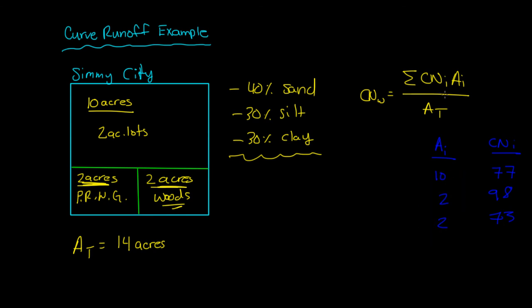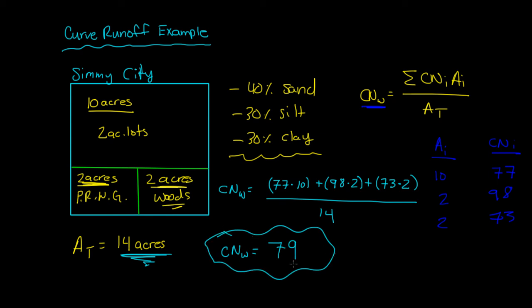Our formula is CN times A_i, or CN_i times A_i. You add all those together, divided by the total area, and you should get your curve runoff number for the whole city. So CN weighted is equal to 77 times 10 acres, plus 98 times 2, plus 73 times 2, and you divide it by the total area, which was 14. And if you punch that into your calculator, you should get 79. So the curve runoff number is pretty high, not too high, but it's relatively high. That means there's a pretty good chance of high runoff.